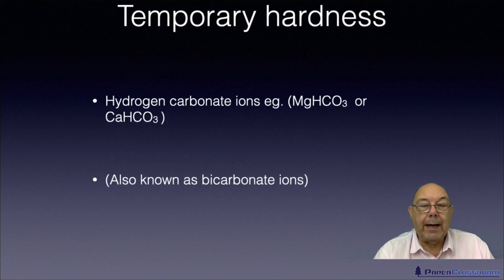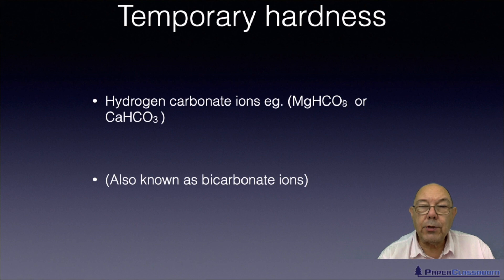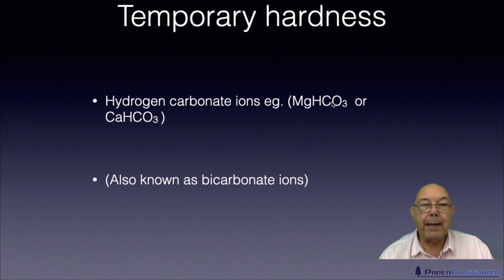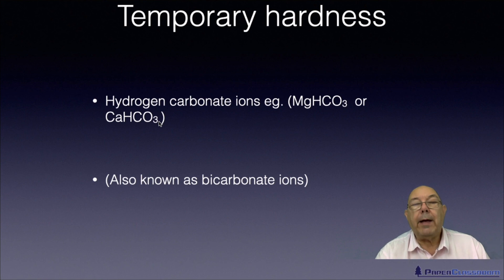Temporary hardness is caused by the bicarbonate ion — HCO₃⁻. So magnesium bicarbonate or calcium bicarbonate. You can destroy those molecules in a way so that you get rid of the hardness.